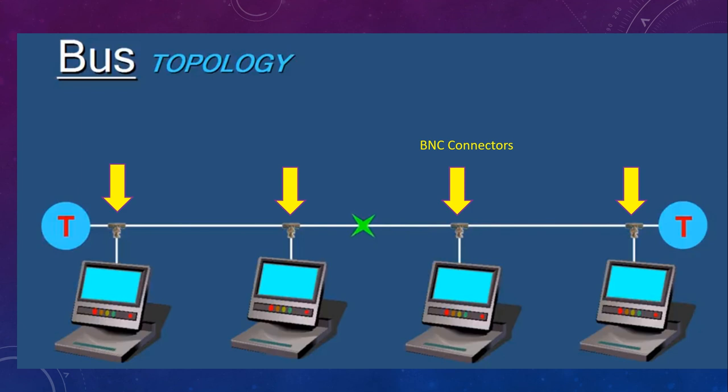Now let's look at different network topologies. The first is bus topology. In this topology there is a single cable that spans across the network, and all devices are connected to that central cable. To connect to the central cable we use BNC connectors, and at the ends of the bus topology cable we use terminators to terminate the connection.